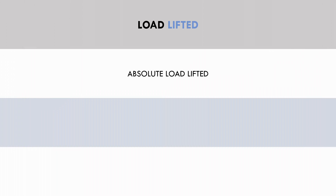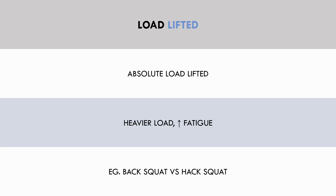The first factor which contributes to systemic fatigue is the absolute load lifted for a given exercise. Generally, the heavier the load is, the more systemic fatigue it will induce. So exercises where the trainee can naturally lift heavy loads will probably be more fatiguing than a similar exercise which allows less load to be lifted. For example, a back squat will require more load to be lifted than a hack squat machine, even though both exercises train the quads.